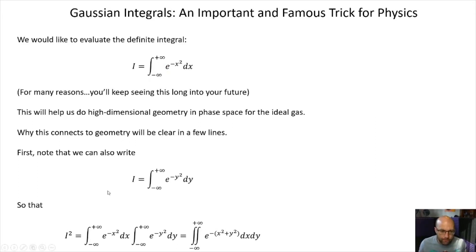So what we're going to do is note that we could also write this integral in terms of the variable y. Why not, right? It doesn't matter whether you call it x, y, z, whatever. So if we wanted to, we could write I² as the integral over all x of the Gaussian times the integral over all y of the Gaussian. And then if you rearrange the integral signs, you get the double integral from minus infinity to infinity of e^(-x²-y²) dx dy.